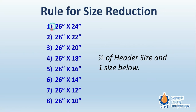So the full range of reducers available for 26-inch pipe starts from 26 by 24 inch, then 26 by 22, 26 by 18, 26 by 16, 26 by 14, 26 by 12, and 26 by 10 inch. That gives a total of 8 sizes of reducers available for 26-inch diameter pipe.